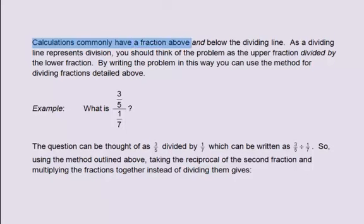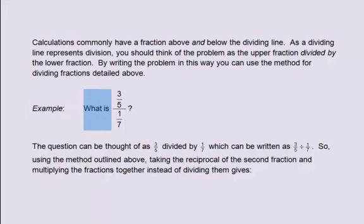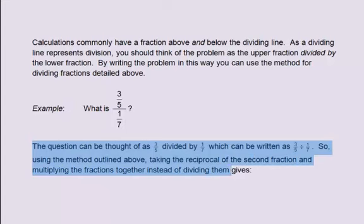Calculations commonly have a fraction above and below the dividing line. As a dividing line represents division, you should think of the problem as the upper fraction divided by the lower fraction, and then use the method for dividing fractions. For example, what is 3/5 divided by 1/7? Taking the reciprocal of the second fraction and multiplying instead of dividing gives: 3/5 multiplied by 7/1, where 7/1 is the reciprocal of 1/7. This equals 21/5.